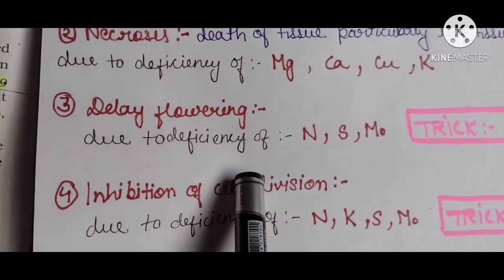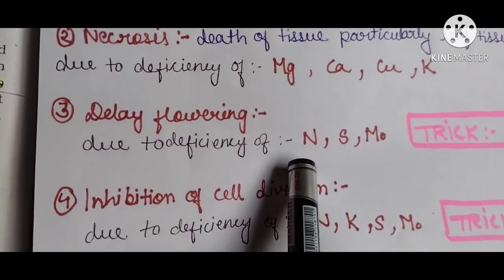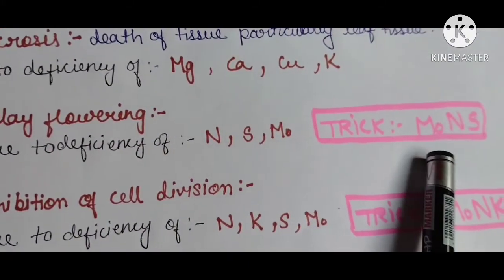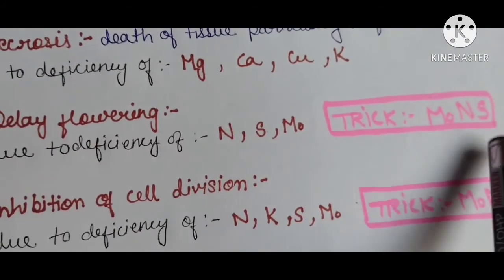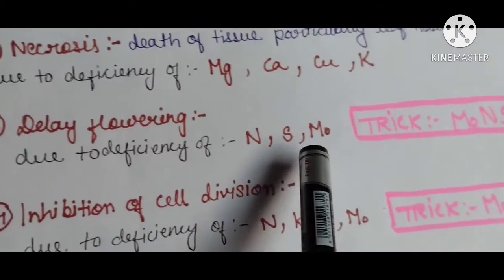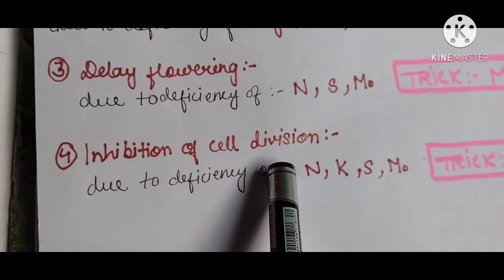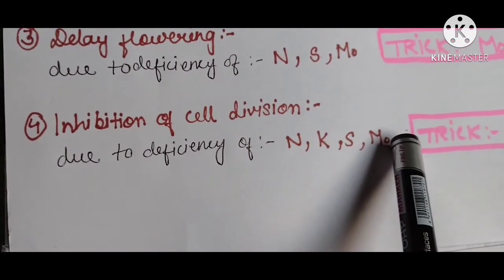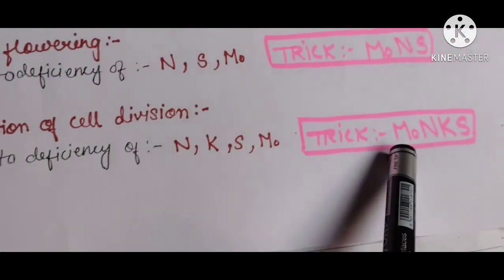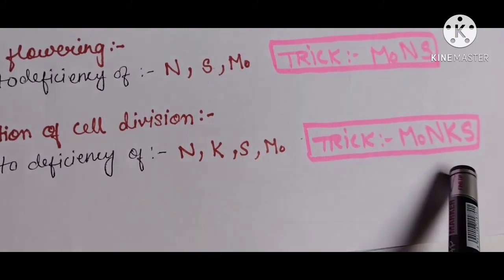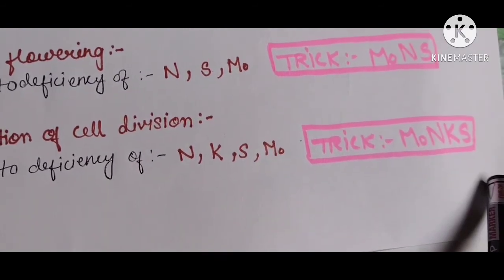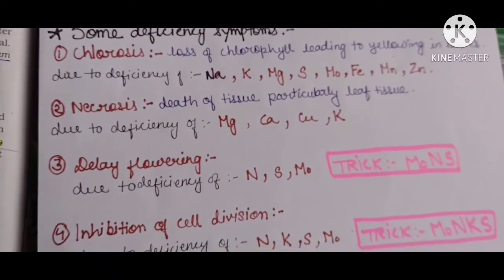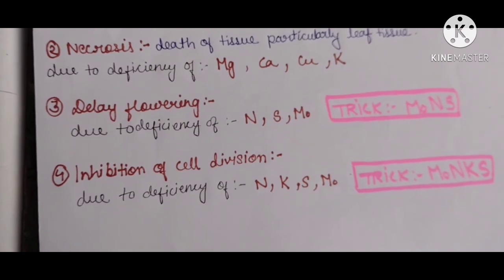Another symptom is delay in flowering, caused by deficiency of certain elements — remember this as 'Mons.' And inhibition of cell division is also a deficiency symptom — this too is associated with 'Mons.' I have covered all the symptoms; I hope you can learn it well. Thank you.